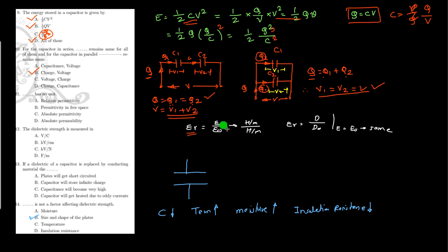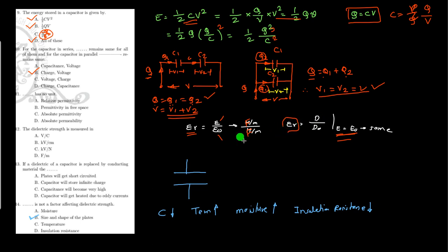Relative permittivity has no unit. Relative permittivity is the absolute permittivity of any medium divided by the absolute permittivity of air. Both are given in farads per meter, so farad/meter ÷ farad/meter gives a dimensionless, unitless quantity. Also expressed as D/D₀ when intensity remains the same in both media. So relative permittivity is the correct unitless option.